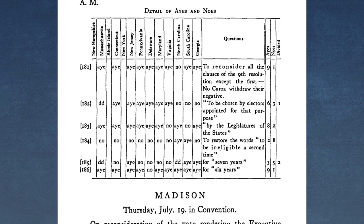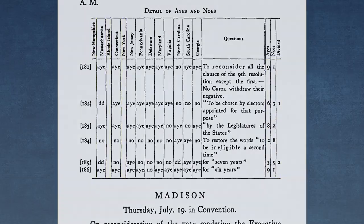It should be noted that with voting data there are numerous irregularities. Because Rhode Island never attended the convention, New Hampshire did not arrive until July 24th, and New York lost its quorum leaving Alexander Hamilton all alone, voting totals may be slightly skewed. This example shows Rhode Island, New Hampshire, and New York not voting in the tally of ayes and noes on July 19th, meaning only 10 states voted on these particular methods.